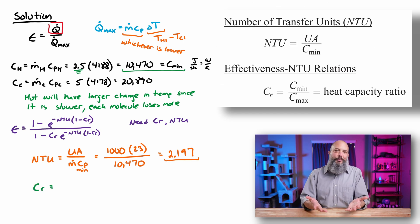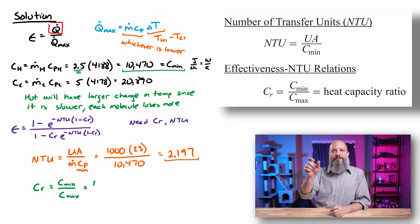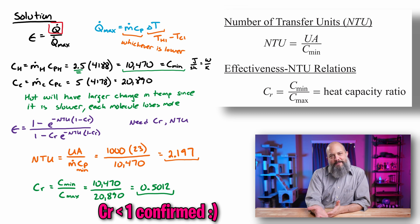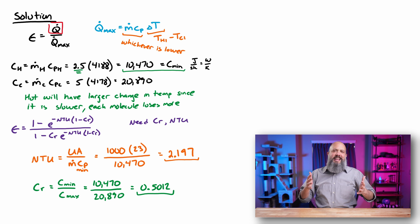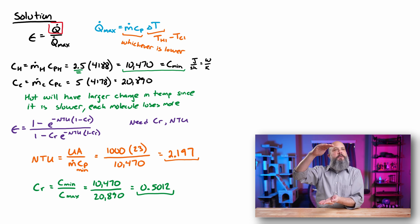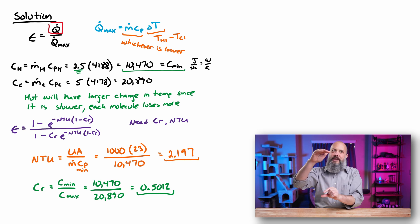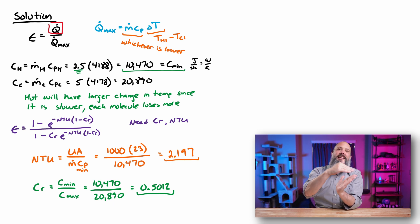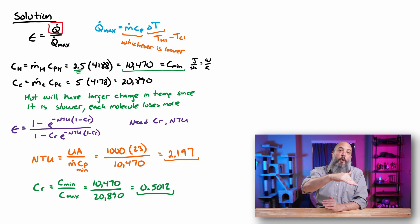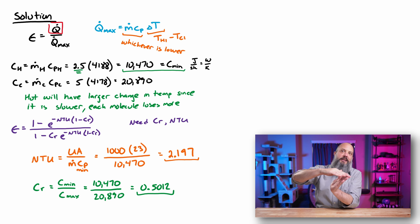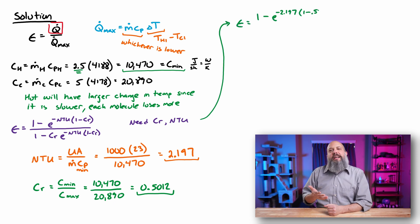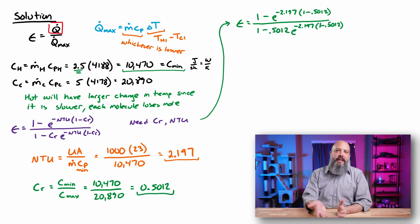CR, the heat capacity ratio, is just C_min divided by C_max — the smaller heat capacity rate divided by the larger one. So 10,470 divided by 20,890 gives CR = 0.5012. CR is needed because the maximum temperature change can only be reached if one stream doesn't change temperature at all — but since both streams are changing, both M_dot × Cp terms affect how much either stream can change. Plugging everything into the effectiveness equation gives epsilon = 0.7998.